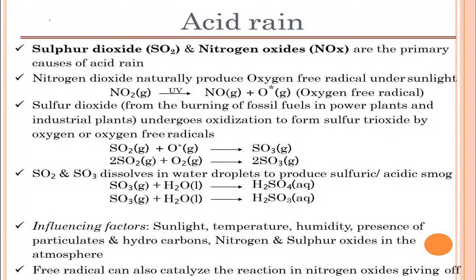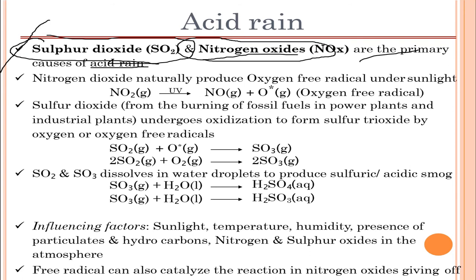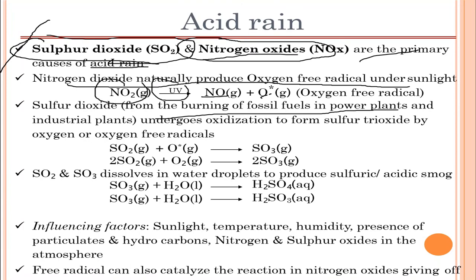Acid rain is primarily caused by sulfur dioxide and nitrogen oxides — an important point for exams. Nitrogen dioxide naturally produces oxygen free radicals under sunlight: nitrogen dioxide dissociates in the presence of sunlight to form nitrogen oxide and oxygen free radicals. Sulfur dioxide, obtained from burning of fossil fuels and oil, under oxidation forms sulfur trioxide, which dissolves in water to form sulfuric acid.